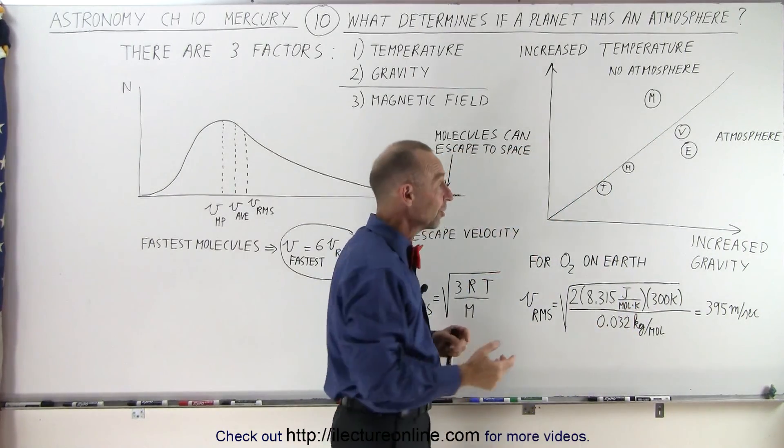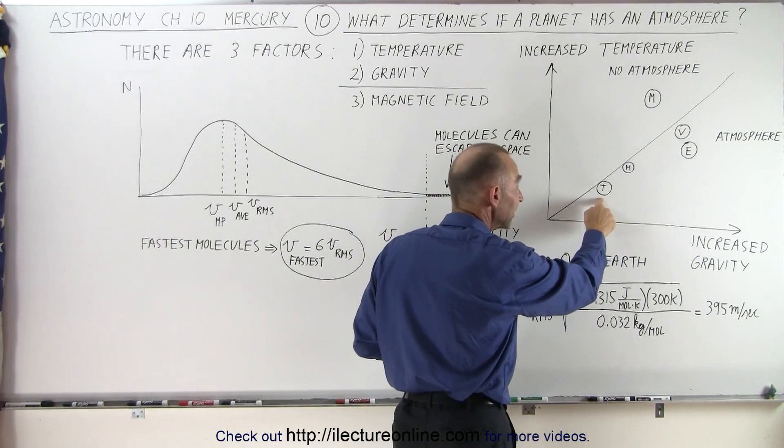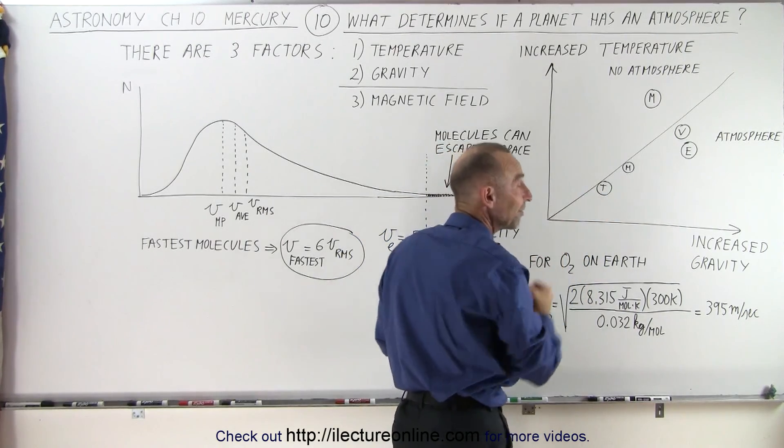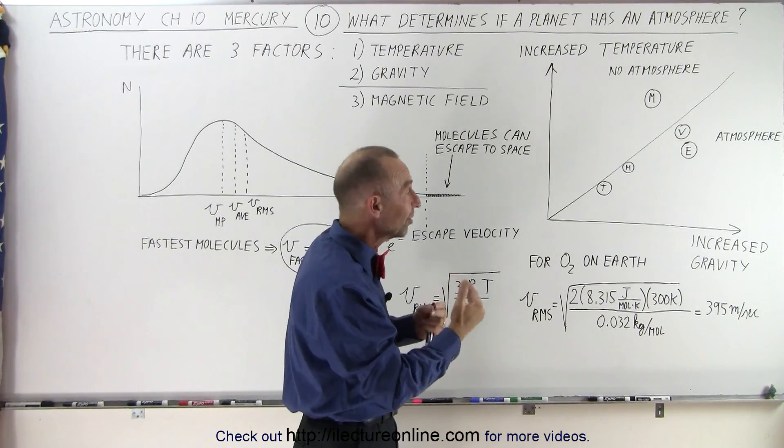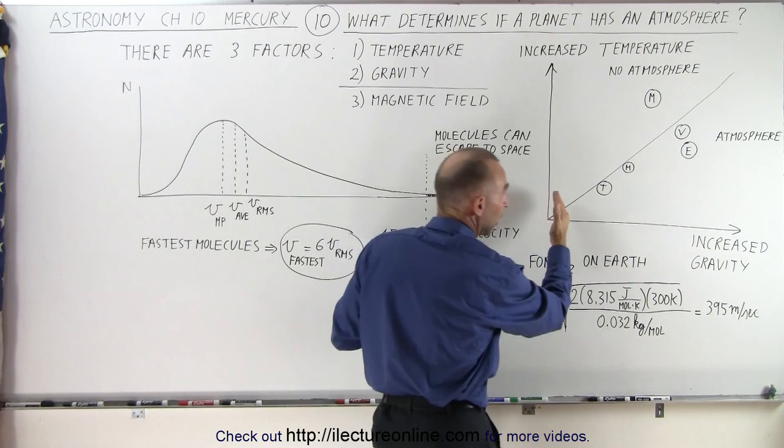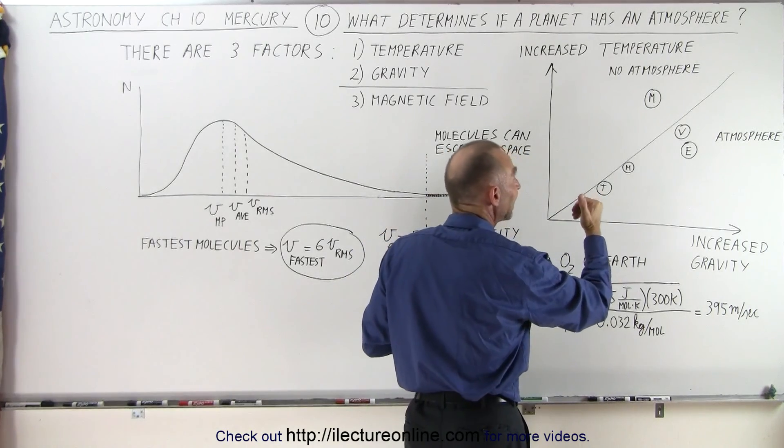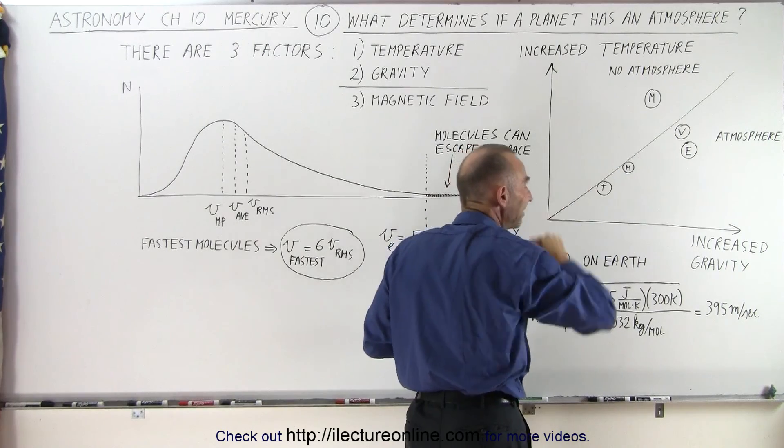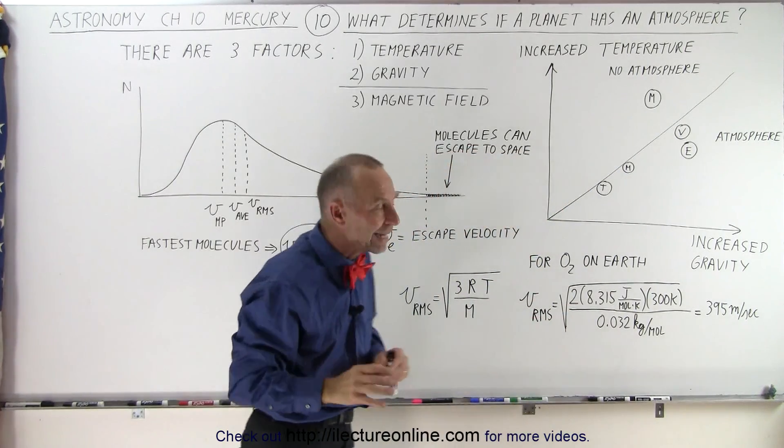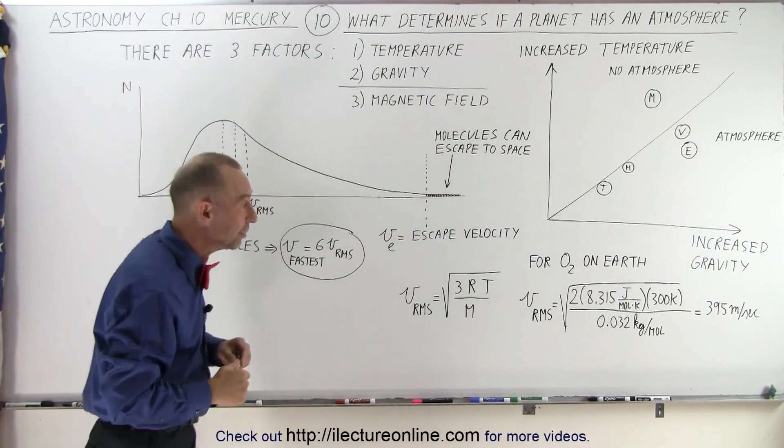And just for comparison, we threw in the moon Titan, because Titan does have an atmosphere, it's the only moon in the solar system that does, and the reason is that it's a large enough moon, so therefore, enough gravity, and it's far enough away from the Sun, so it's cold enough, so that, yes indeed, under the rules, it can have an atmosphere, and indeed it does.